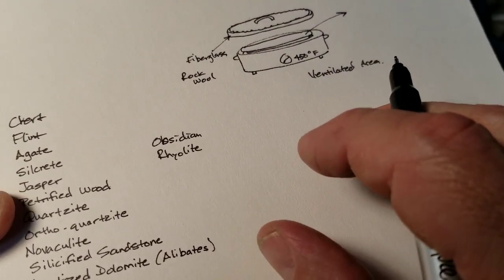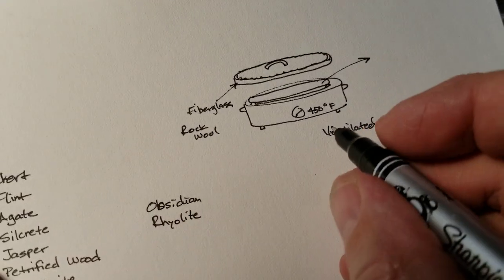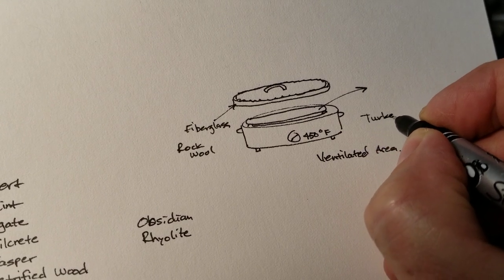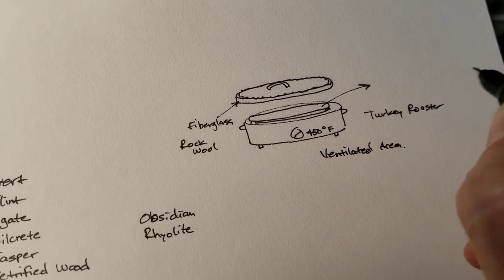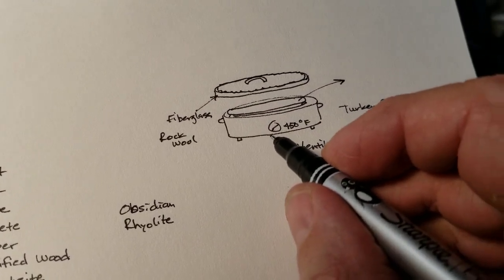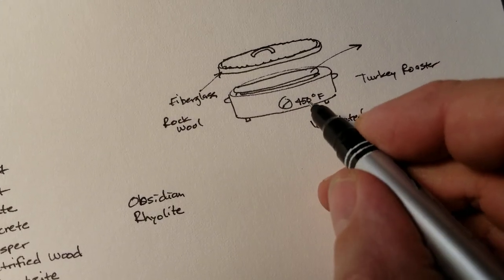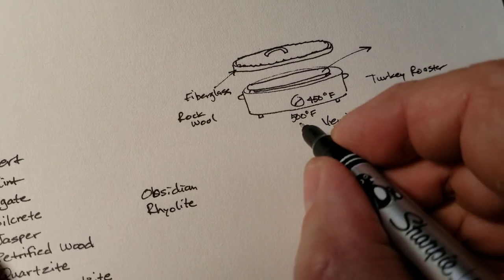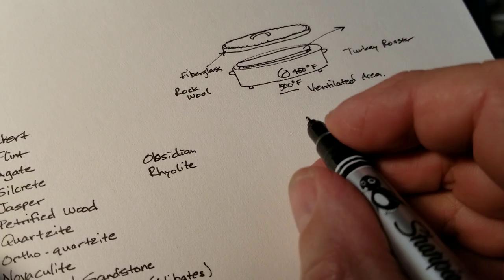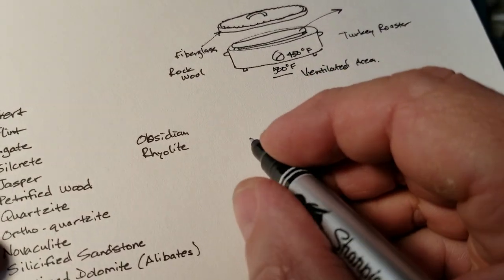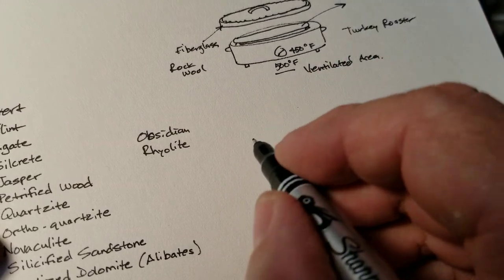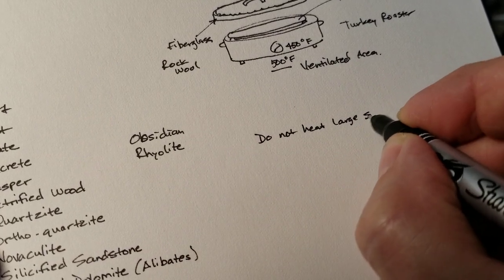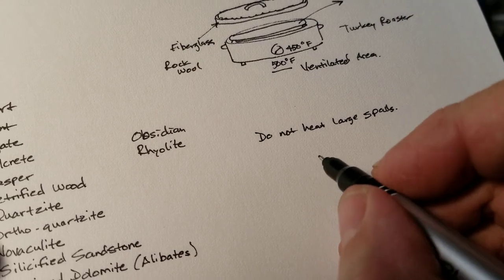I'm not going to get that specific. My technique for heat treating is simply to prepare this first, prepare your turkey roaster. Because you can sometimes buy these secondhand at thrift stores for like 10 bucks or whatever. Make sure it goes up to 450 or even better if it goes up to 500 degrees Fahrenheit. Most of them go up to 450. Try to get one that goes up to 500. What you do is, the smaller the flakes and spalls that go in there, the better. Do not heat large spalls. That's one of the rules.